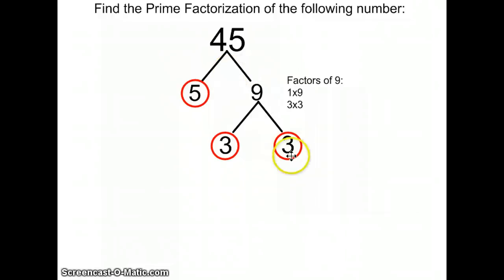If you look in my factor tree, I don't have any more numbers that have branches to continue. So this means that I am done. Since I've reached the end of all my branches, the next step is to write a product of my prime factors. And a good practice to use is listing them in order from least to greatest. So my product of prime factors is going to be 3 times 3 times 5, which is the three numbers that I circled.